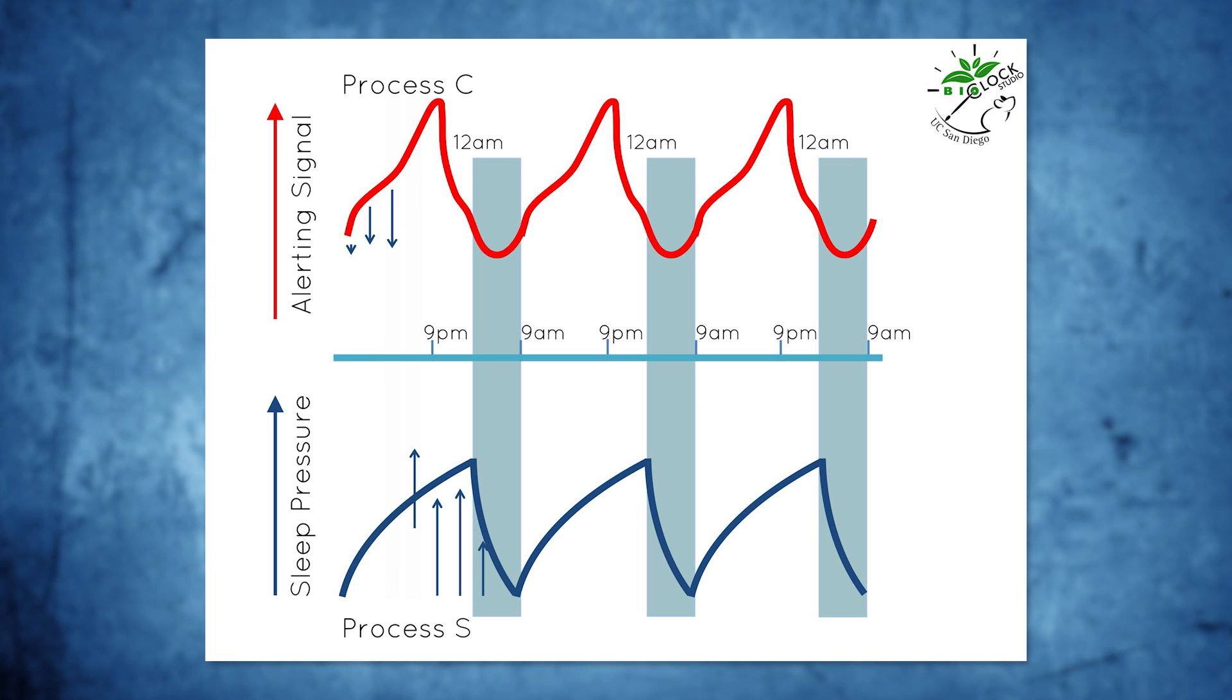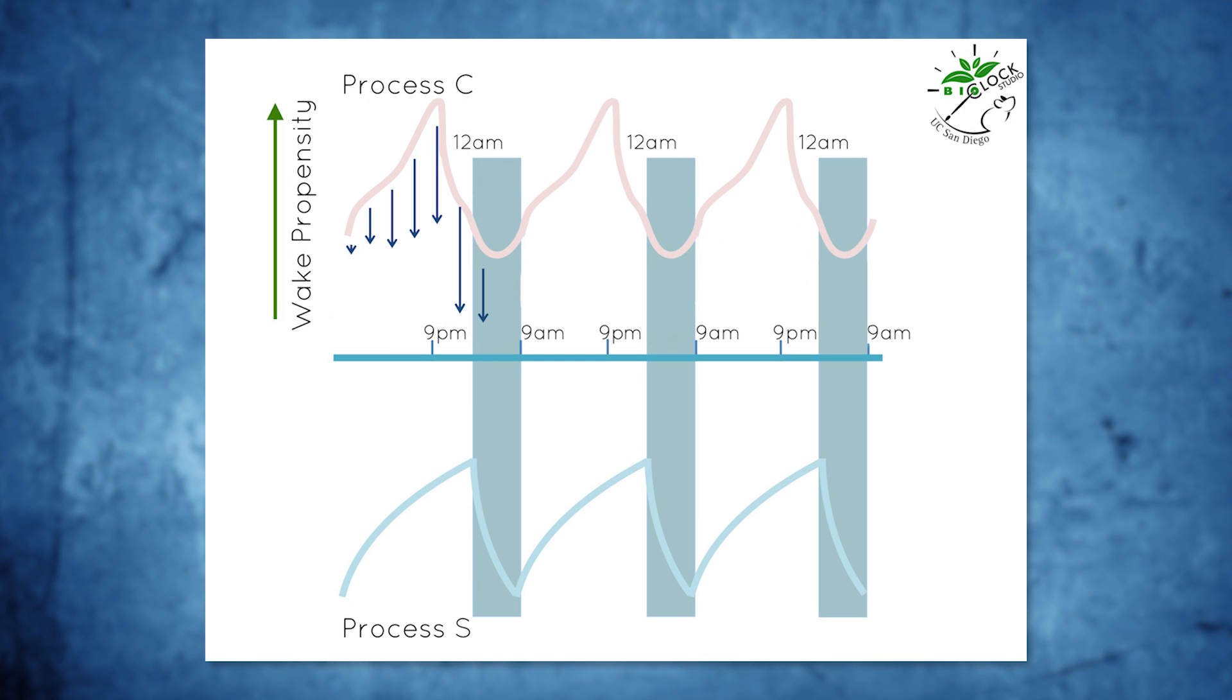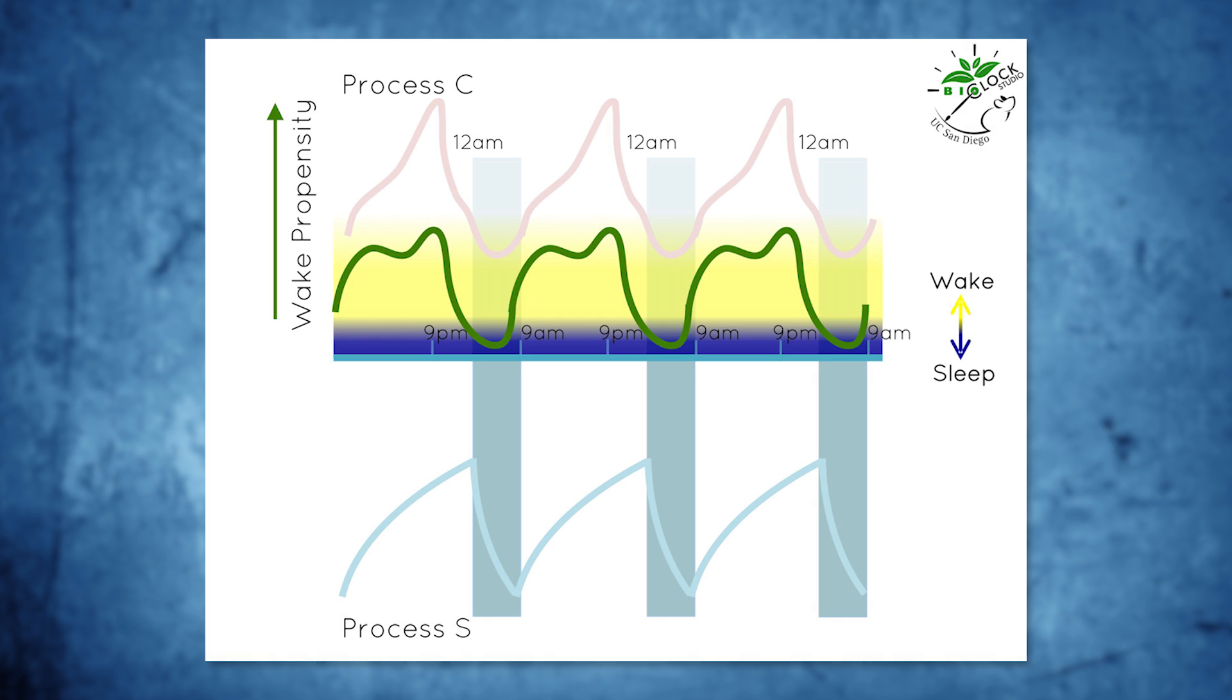The sleep pressure antagonizes the circadian alerting signals, and the balance of circadian alerting signals and homeostatic sleep pressure creates a normal waveform of wake propensity. As you can see, this person follows a regular sleep pattern with their wake and sleep episodes during the same interval of each 24-hour period.